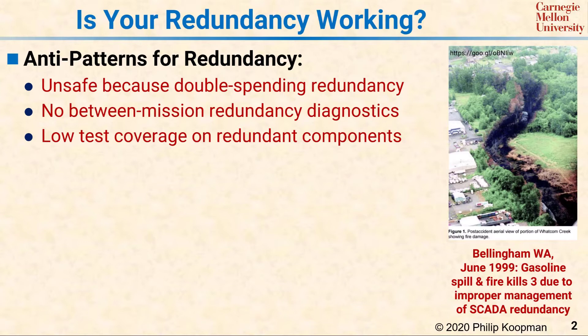The gasoline flowed into a creek and caught fire, causing a large burn zone that resulted in $45 million of damage and, unfortunately, three fatalities. While several factors contributed to this incident, a proximate cause was improper management of a redundant control system.